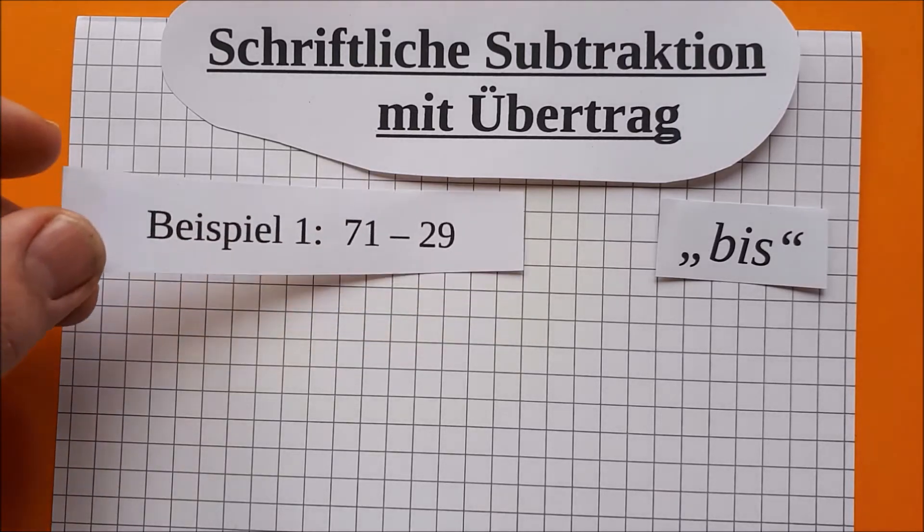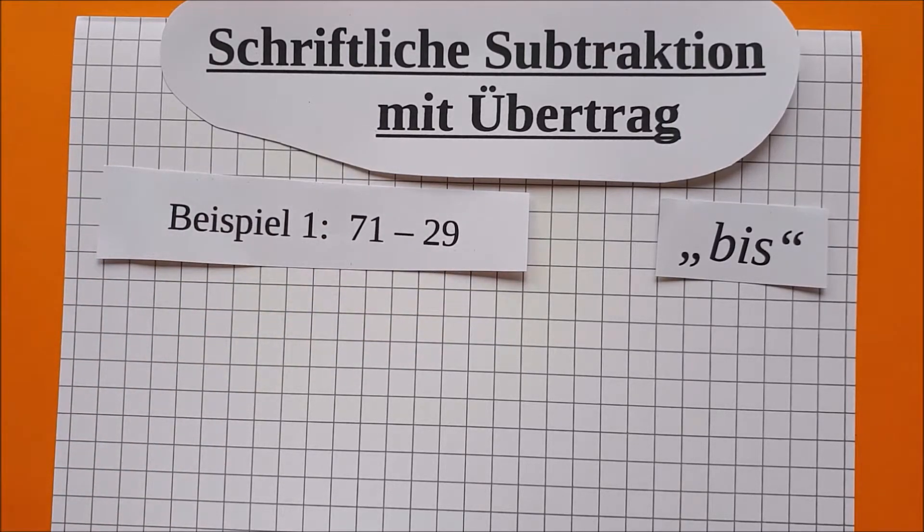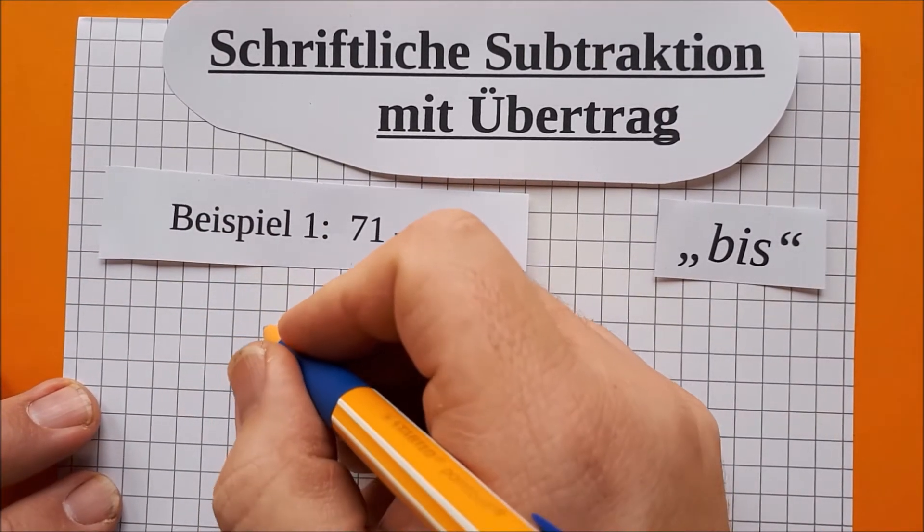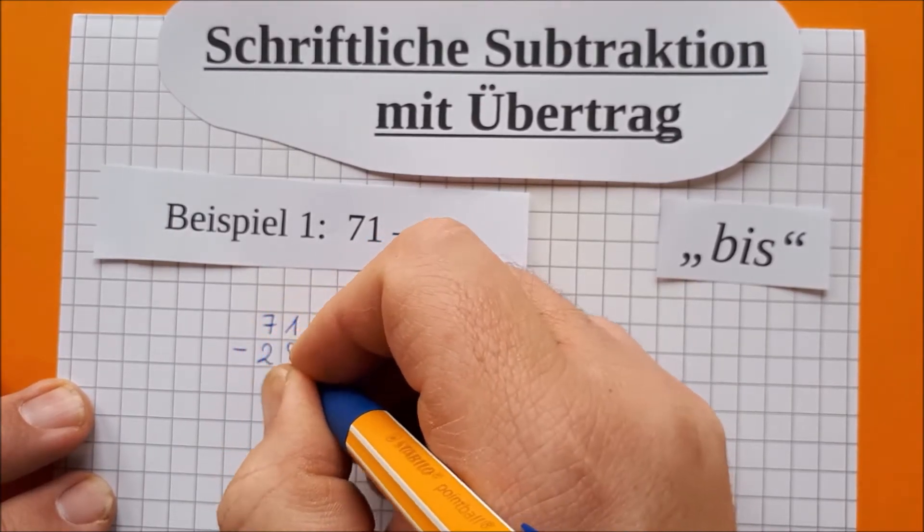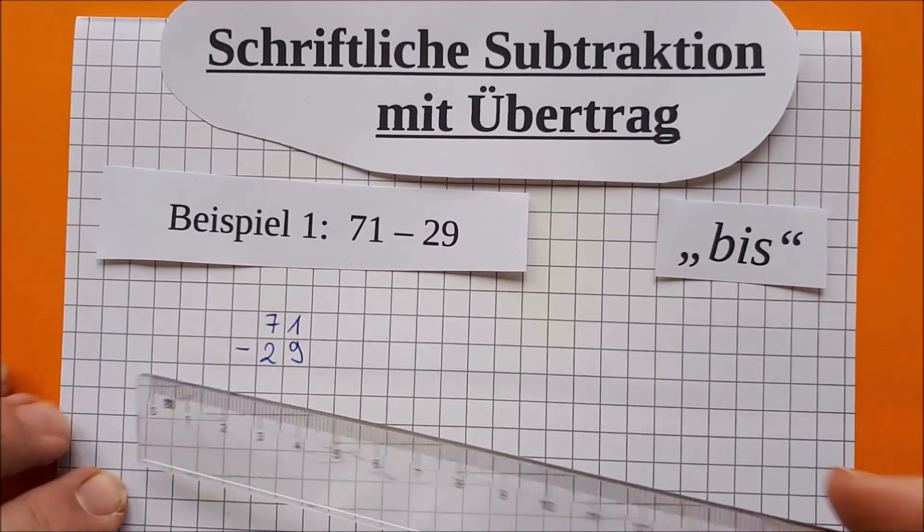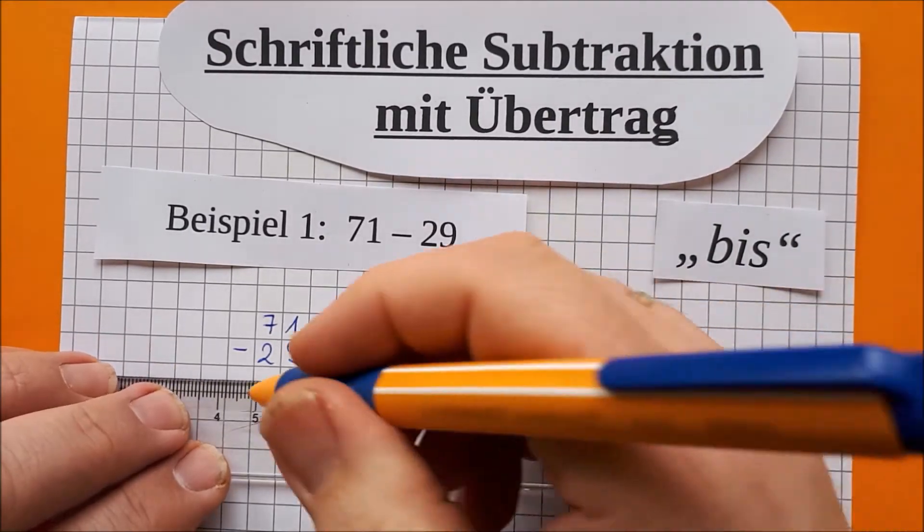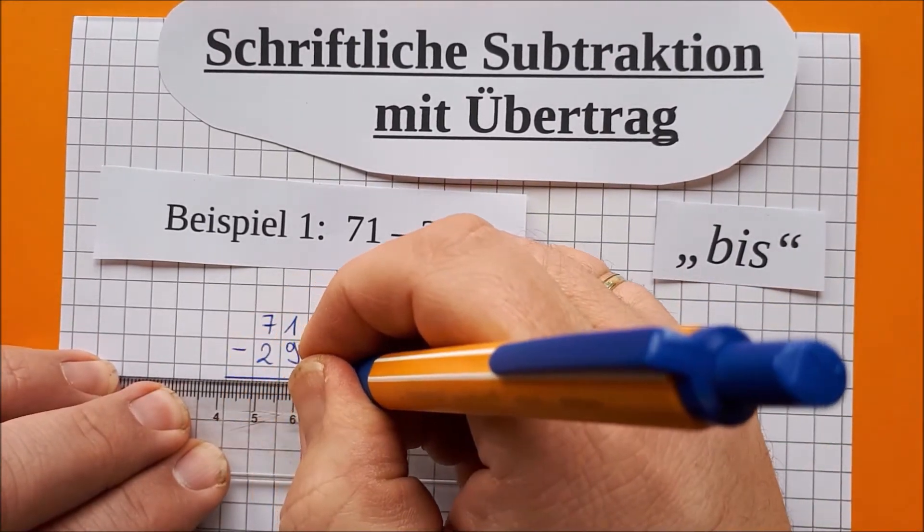Gucken wir uns das erste Beispiel an. 71 minus 29, das schreibe ich euch untereinander. 71 minus 29. Wo ist das Lineal? Das liegt hier hinten. Der Strich kommt in die Mitte der Kästchenreihe. Das werden wir gleich brauchen.